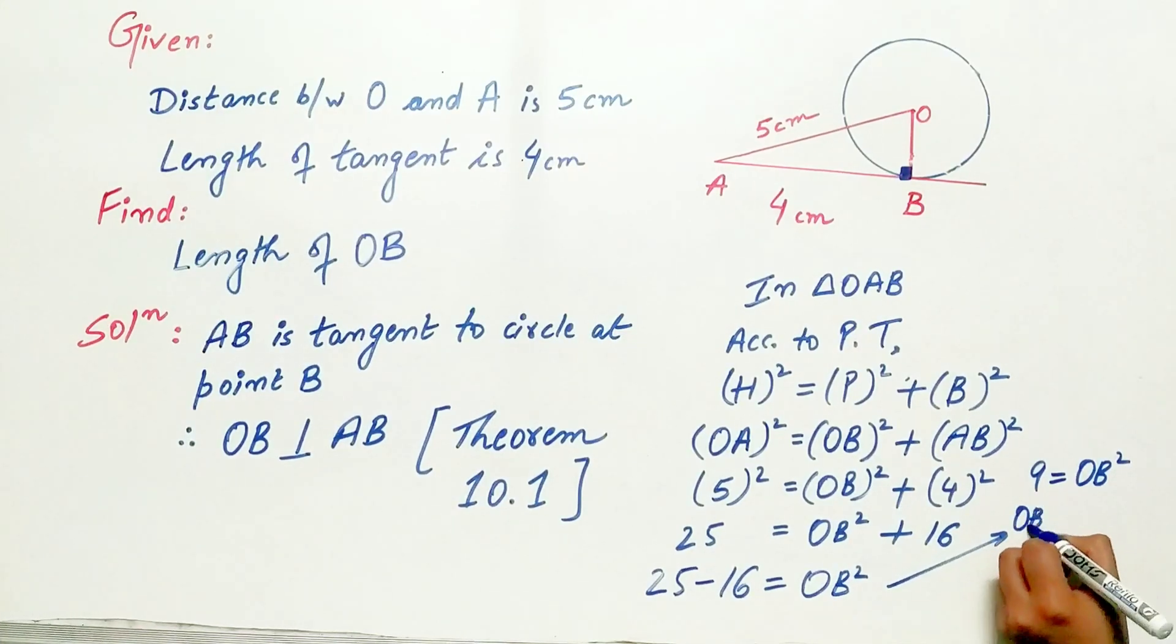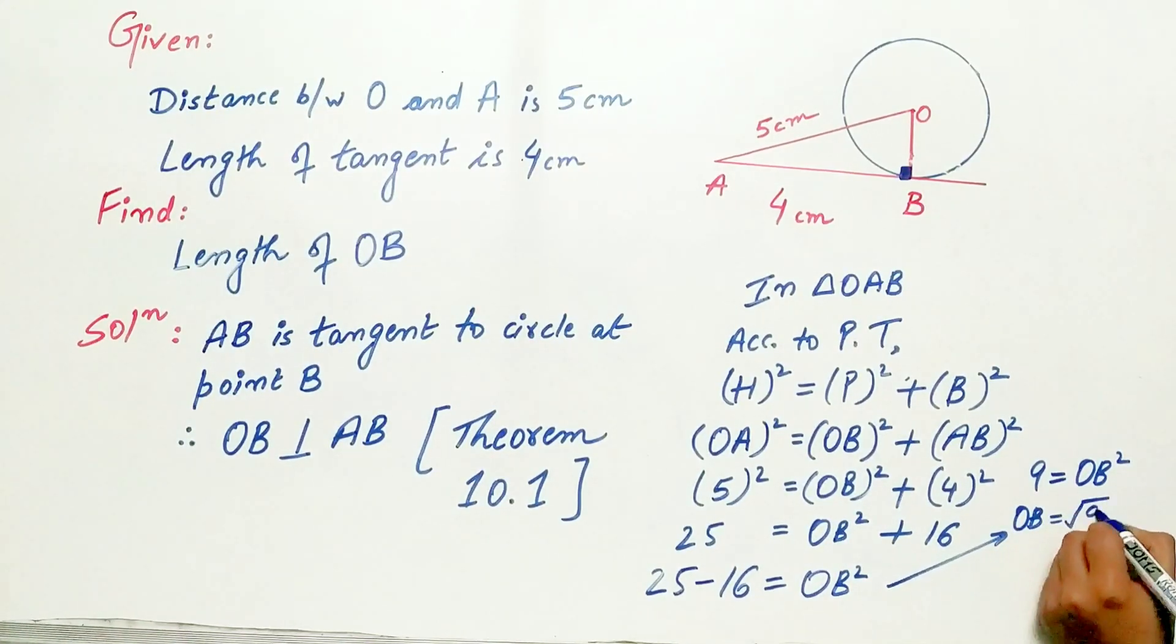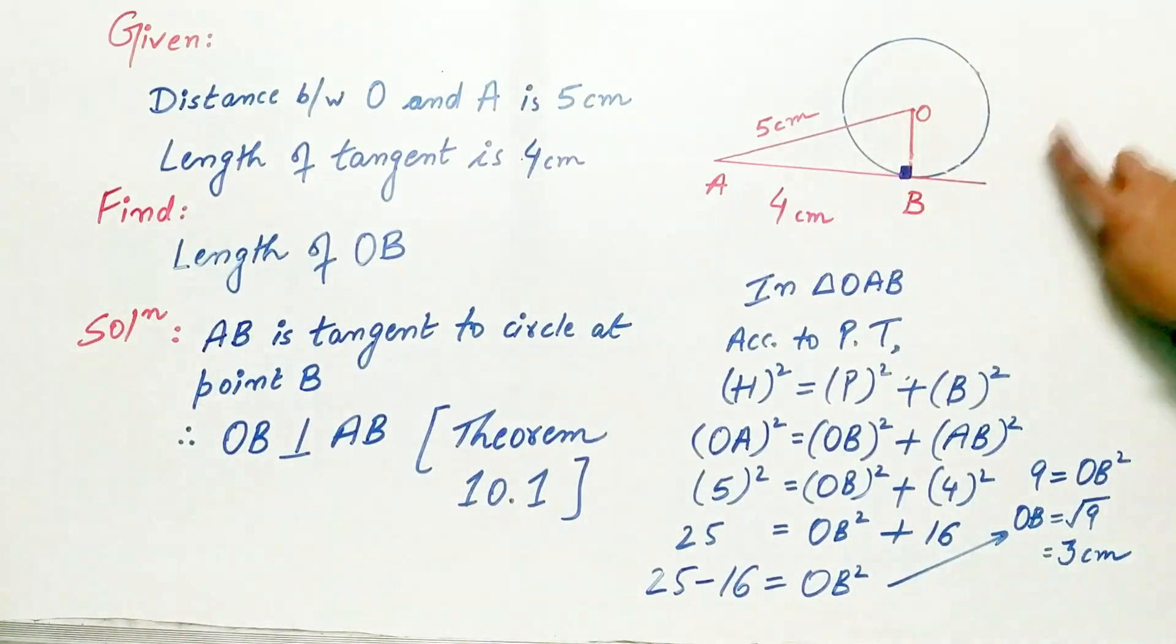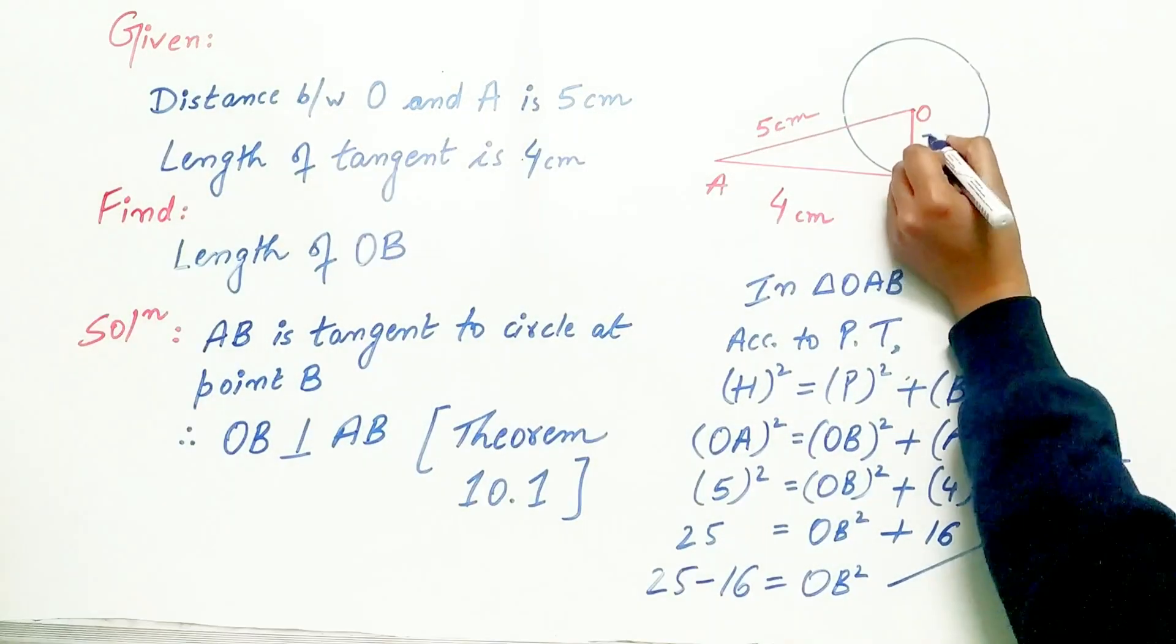OB is square root of 9. That is 3. 3 cm. Exactly. Hence, the radius of circle is 3 cm.